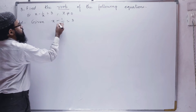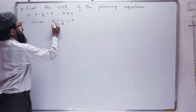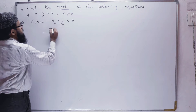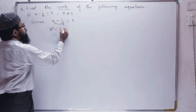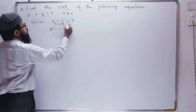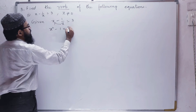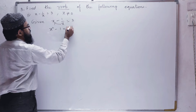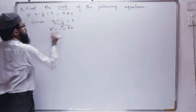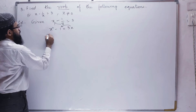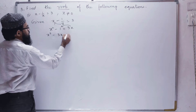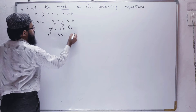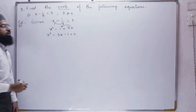Next, let us solve this. Multiplying both sides by x: x squared minus 1 equals 3x. Bringing 3x to this side: x squared minus 3x minus 1 is equals to 0.